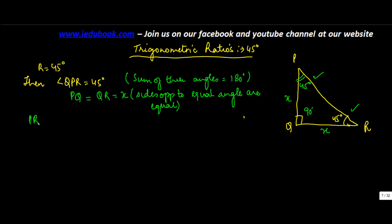Then what will be the value of PR? Now you have to use the Pythagoras theorem to find out the value of PR. So PR squared is equal to PQ squared plus QR squared, which is equal to X squared plus X squared. So PR squared is equal to 2X squared, which implies that PR is equal to square root of 2X squared, which gives you root 2 into X.